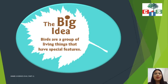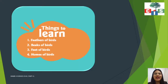So what is the big idea of the chapter? Birds are a group of living things that have special features. We all know that birds can fly, so that is obviously a special feature which we don't have. Now we are going to study about birds. The things we are going to learn are: feathers of the birds, then the beak, then the feet, and then the homes of birds. So let us begin.